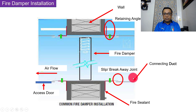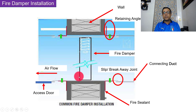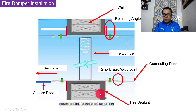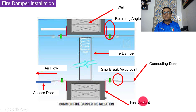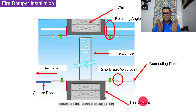We also need to look at the airflow through the connecting duct. The gap between the retaining angle and the wall must be treated with fire sealant. This is the correct way of installing a fire damper.